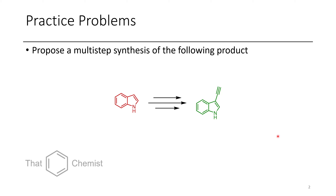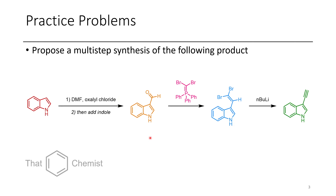In this first problem, we start with indole and we have to get to this 3-alkynyl indole. The route I would propose starts with DMF — we'll do a Vilsmeier reaction and add a formyl group to the 3-position of indole, which is the most nucleophilic site under most conditions. Then we can do a Wittig reaction, and then a Corey-Fuchs reaction to end up getting this alkyne product through a 1,2-shift.